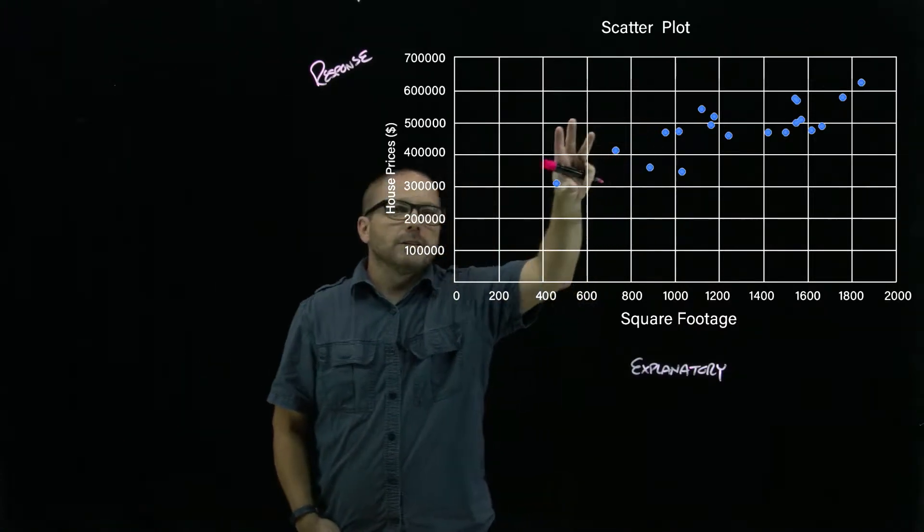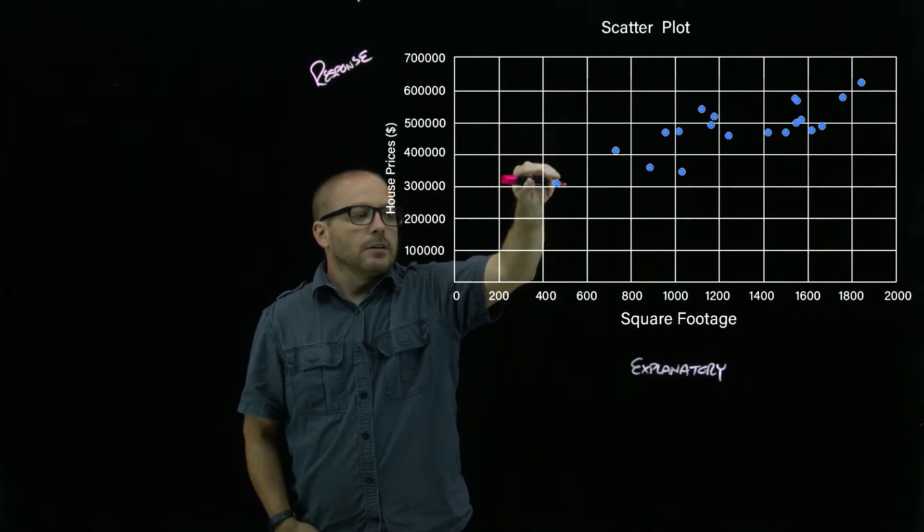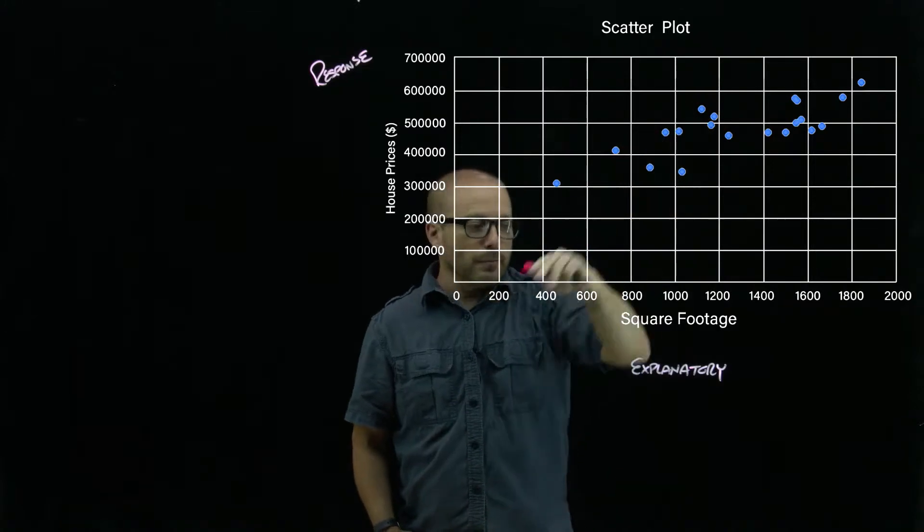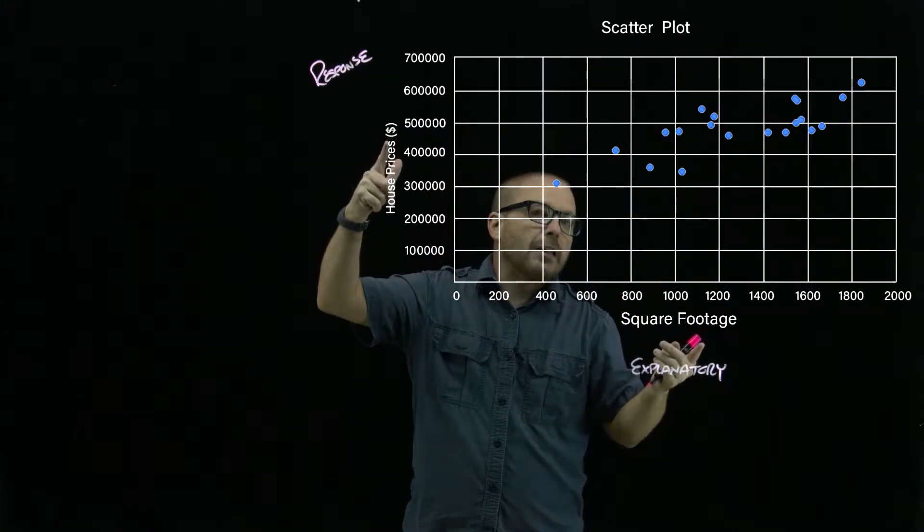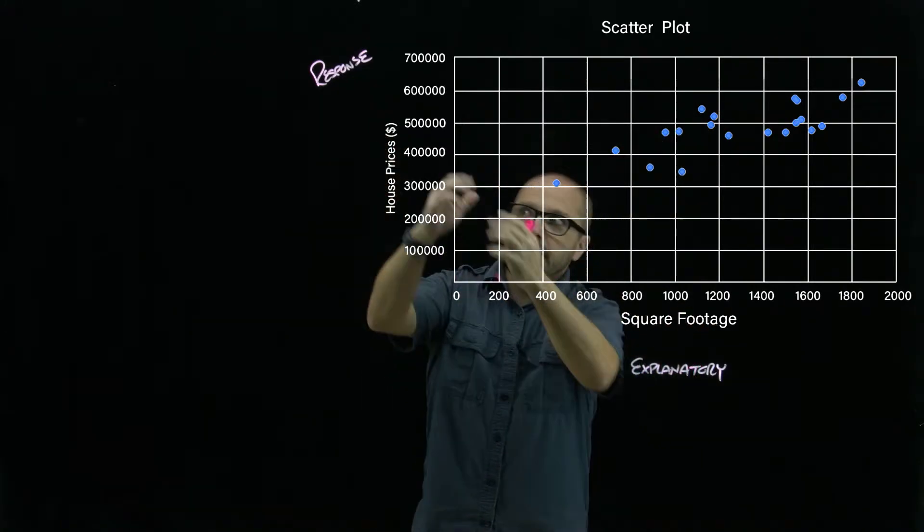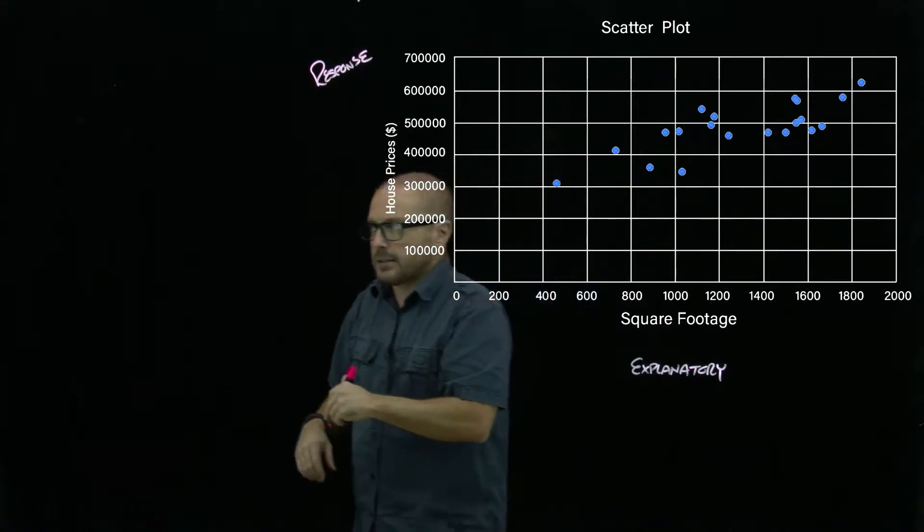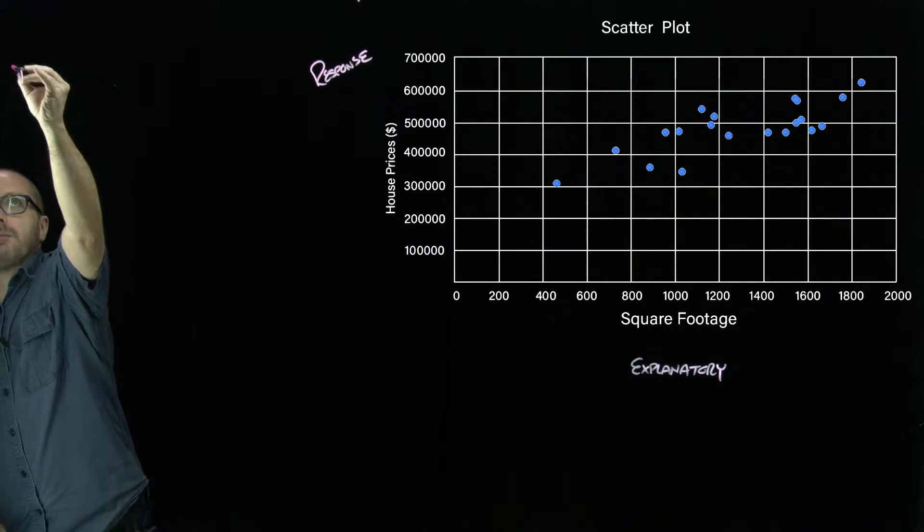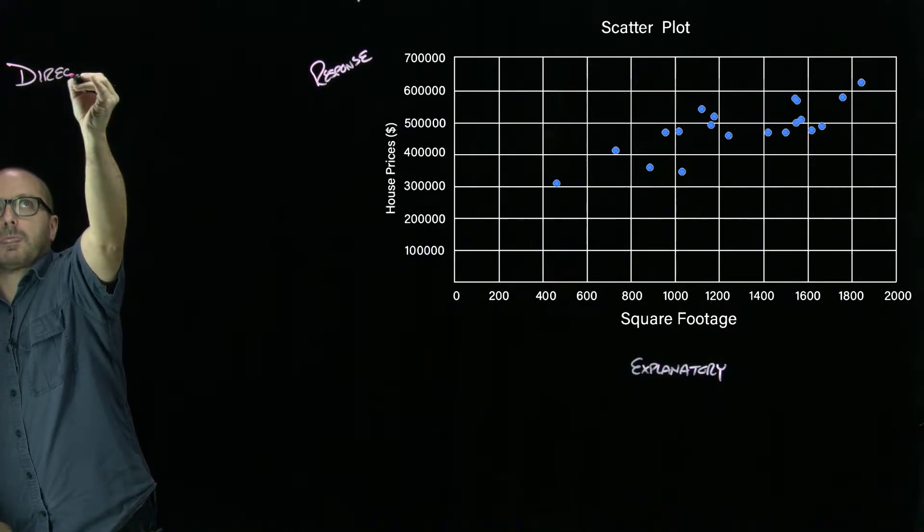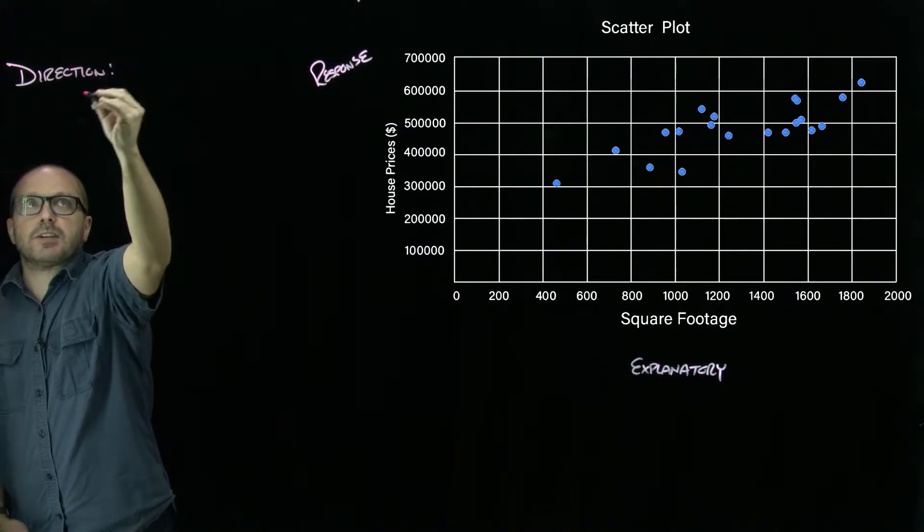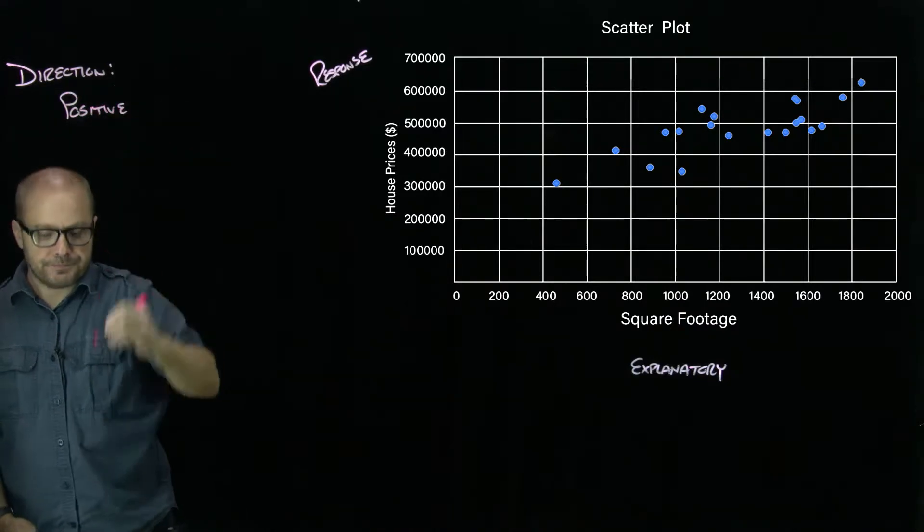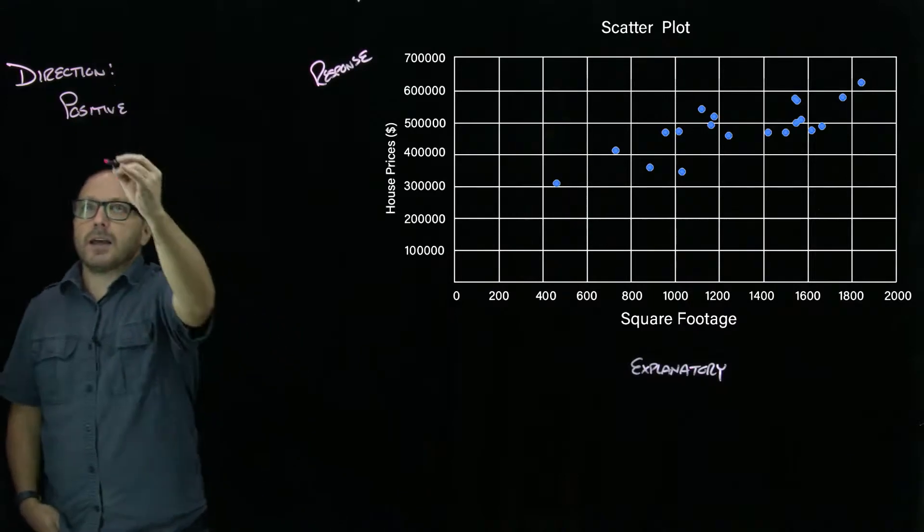The things we're going to be looking for is the direction of that relationship. We call this a positive association. The simplest way to think of it is the line that would fit has a positive slope—it's going up. Positive means they move together in the same way: more square footage means more cost in the house. So in terms of our relationship, we're interested in direction—positive or negative.